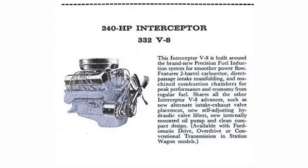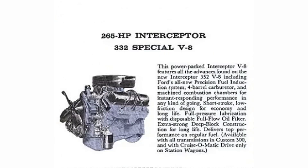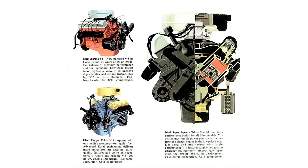Enter the Ford FE engine. In this engine episode, we will cover the 332, 352, 361, 390, 406, 410, 427, and 428 engines. The 429 is a totally different engine family.